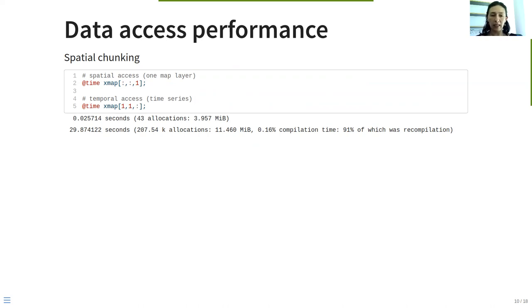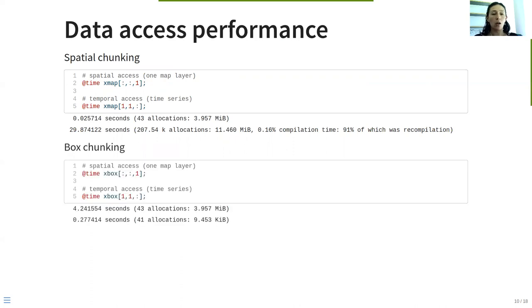Here also for the timing of temporal access, we need to be a little bit cautious because we are also having the compilation time. In this case it's 0.16 percent, a very low value, less than one second, and is negligible for these comparisons. We do the same for the box chunking, and what we observe is that accessing the spatial dimension is slower than accessing the temporal access.